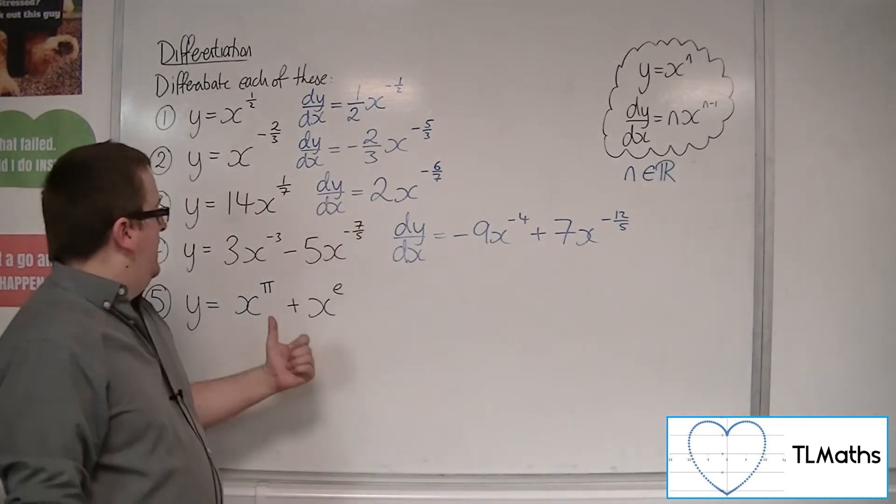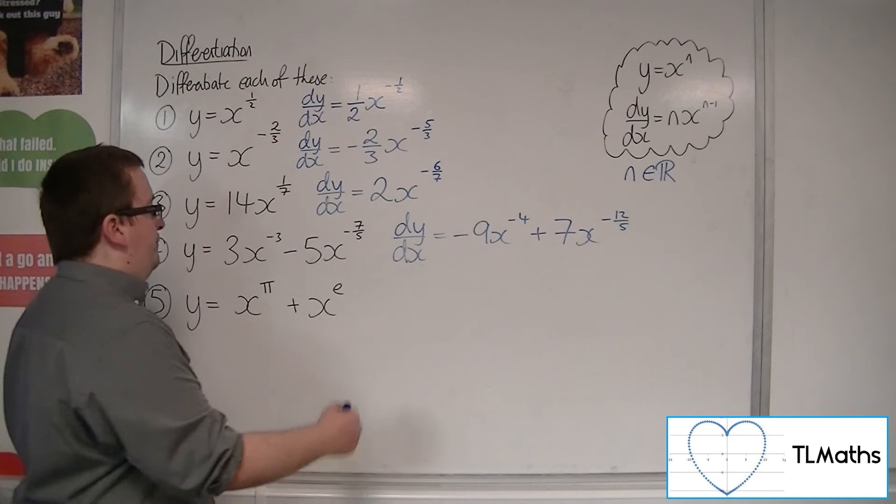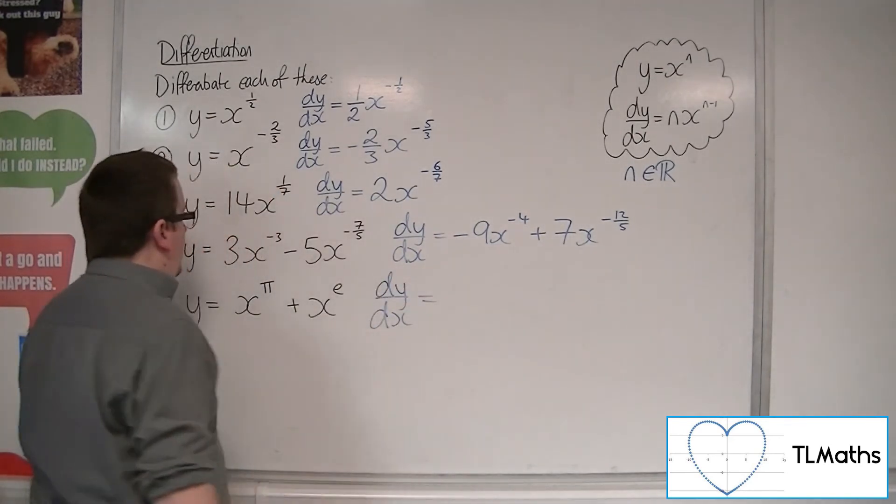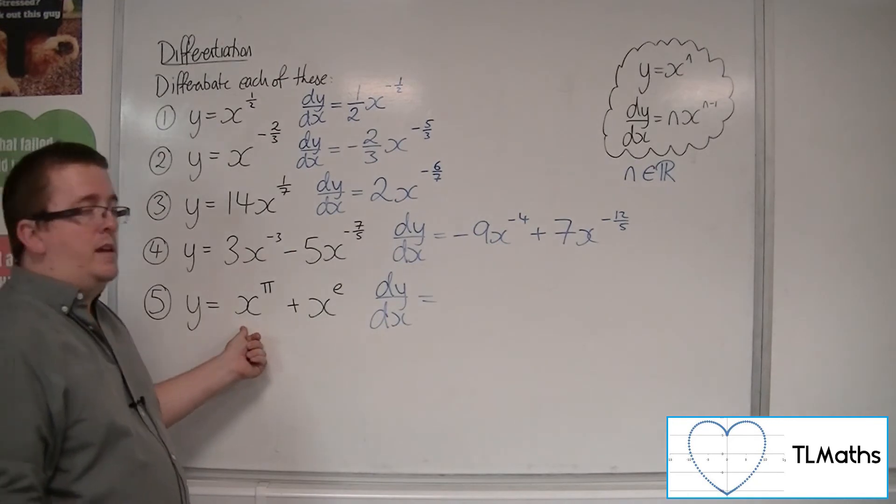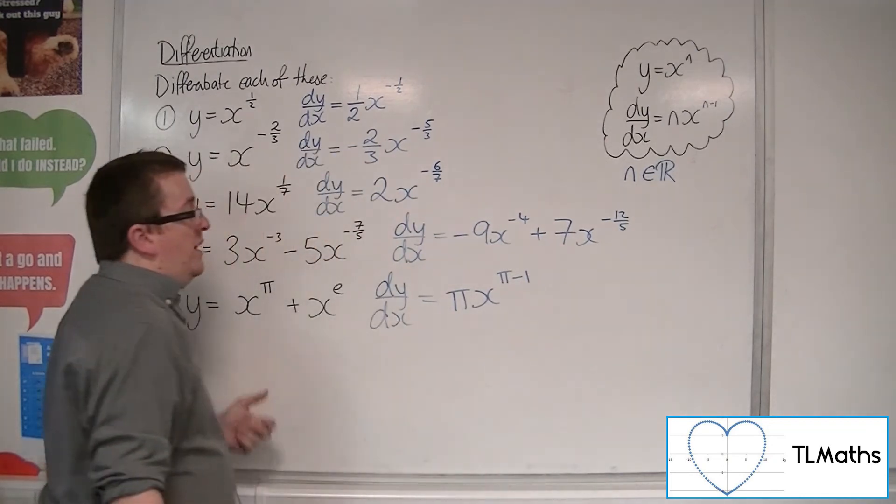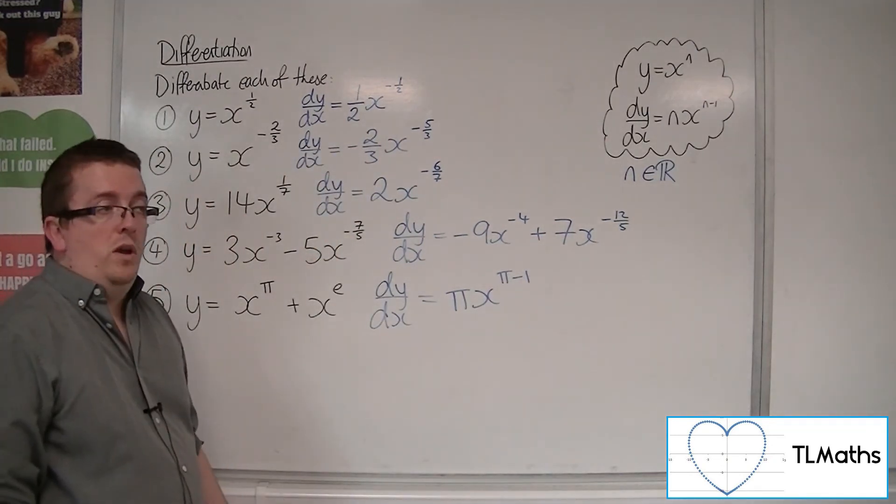And then finally, number 5. Dy by dx will be, the pi can come down to the front, and then we take 1 off the power, which I can only just write as pi take away 1.